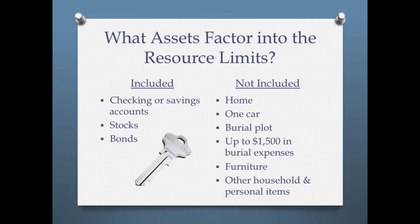In addition to meeting the monthly income limits, applicants must also meet resource limits. In 2015, the total of an individual's checking and savings accounts, stocks, and bonds could not exceed $7,280 to qualify for QMB, SLMB, or QI. The limit for married couples was $10,930.